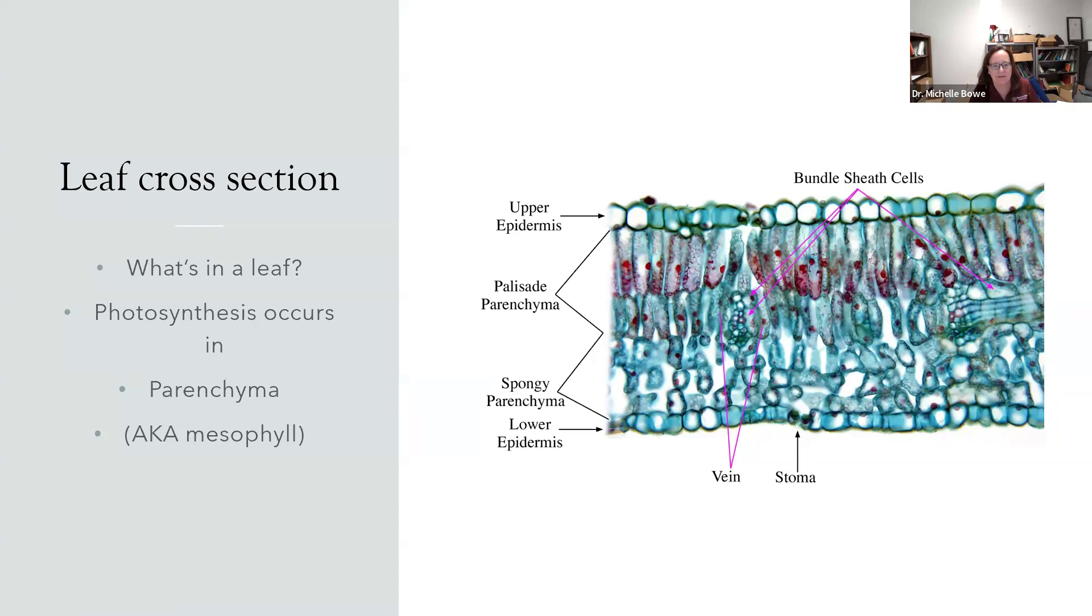Xylem carries water throughout the plant, and phloem carries the food that the plant makes throughout the rest of the plant. Photosynthesis occurs in the parenchyma, sometimes called mesophyll. Virtually all land plant leaves have a cuticle, which is thick enough to keep the water inside the plant. So if the stomata are closed, water does not escape from the leaf most of the time. So plants can regulate water coming in and out by closing or opening the stomata, and water does not generally go through the cuticle. That gives plants the ability to live on land and not have to be in the water.